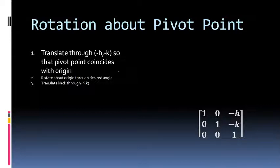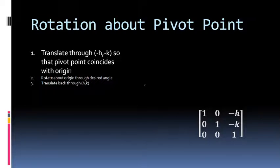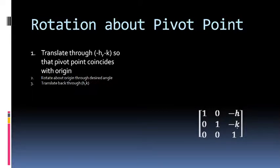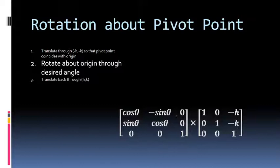To obtain the matrix form of this calculation, let's focus on each transformation. The first transformation is a translation with parameters minus h and minus k, so we write the translation matrix for minus h and minus k. The second step is to rotate about the origin through the desired angle theta, so the rotation matrix about the origin is written for angle theta.